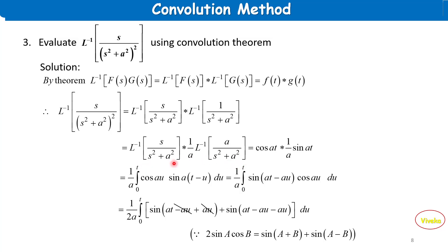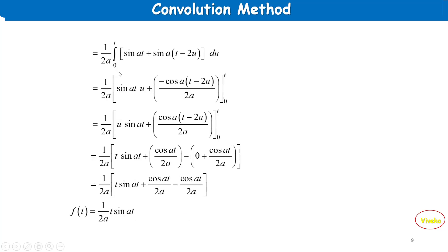The first function inverse is cos(at), and the second function inverse is (1/a)·sin(at). Applying the convolution formula: (1/a) integral from 0 to t of cos(au)·sin(a(t−u)) du.